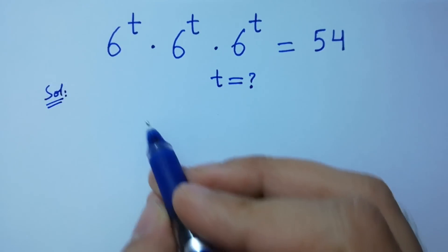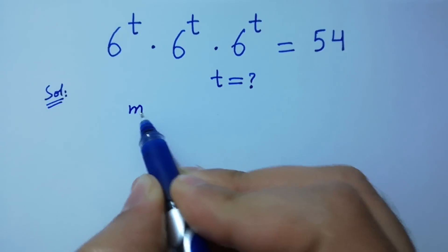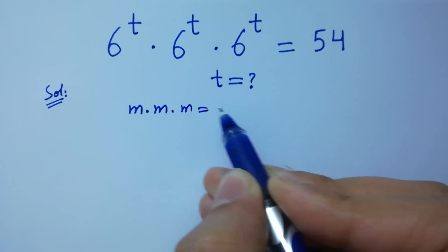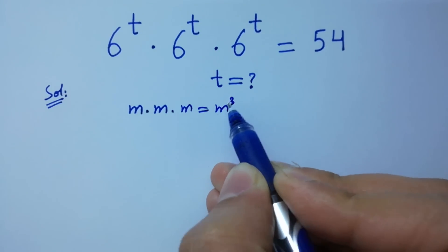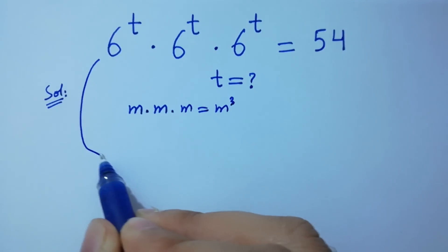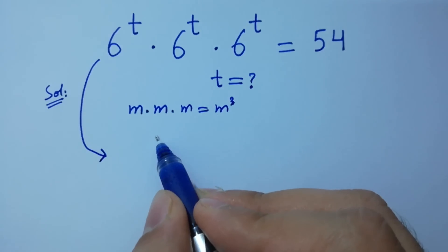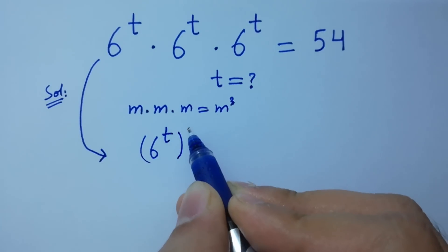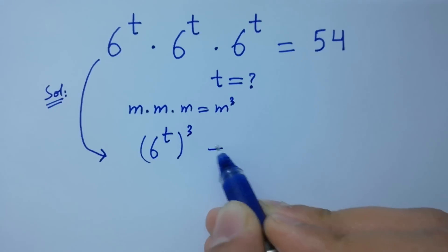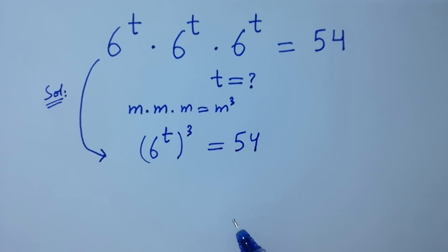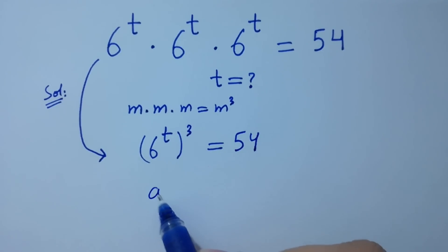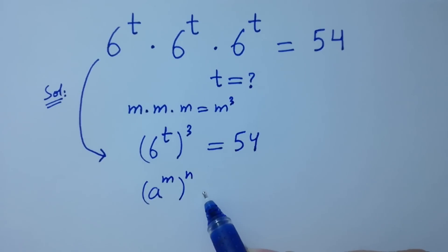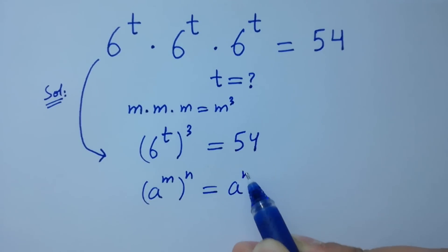As we know m times m times m equals m cubed, then it will be 6 to the power t to the whole power 3 equals 54. Using the rule: a to the power m, to the whole power n, equals a to the power m times n.